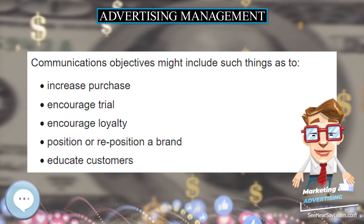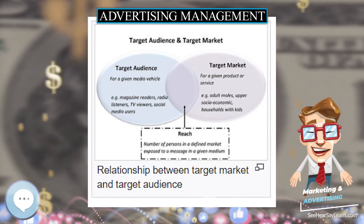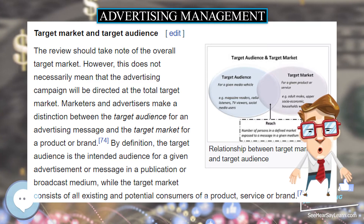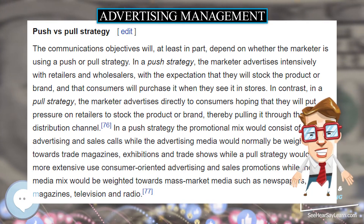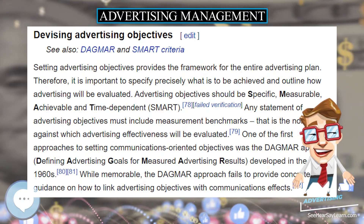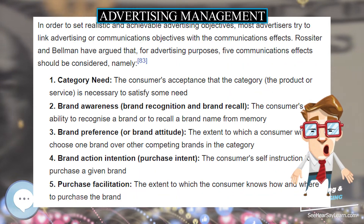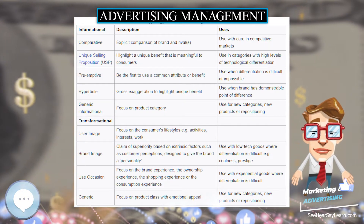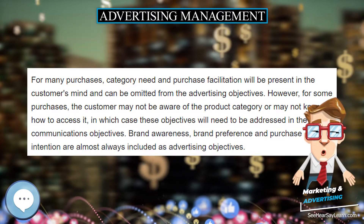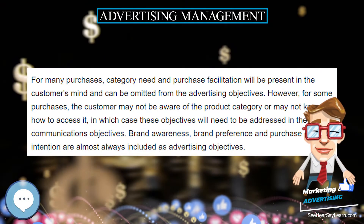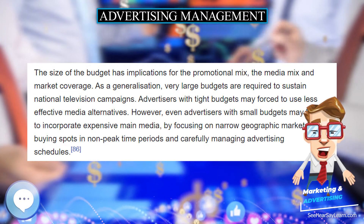The literature identifies five different types of integration in integrated communications: (1) Image integration — messages with a consistent look and feel regardless of the medium; (2) Functional integration — different promotional tools complementing each other to deliver a unified, coherent message; (3) Coordinated integration — different internal and external agencies such as web designers, advertising agencies, and PR consultants coordinating to provide a consistent message; (4) Stakeholder integration — all stakeholders including employees, suppliers, and customers cooperating to communicate shared understanding of key messages; and (5) Relationship integration — communications professionals contributing to overall corporate goals and quality management.